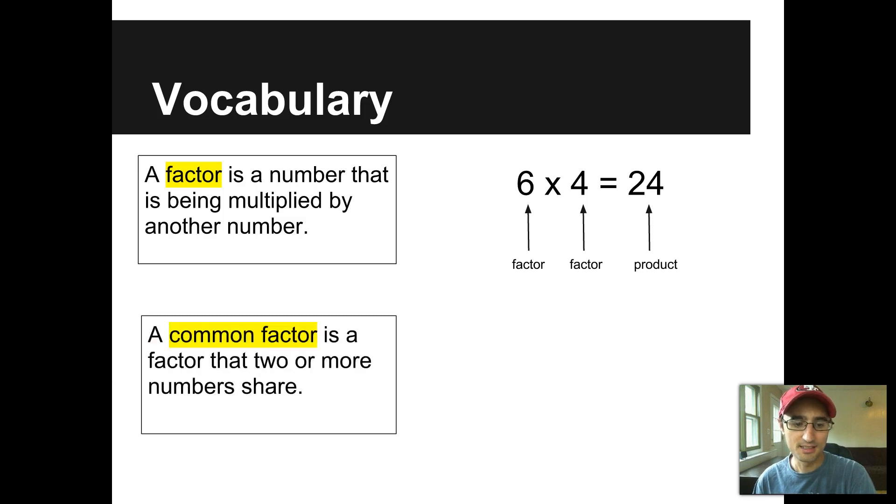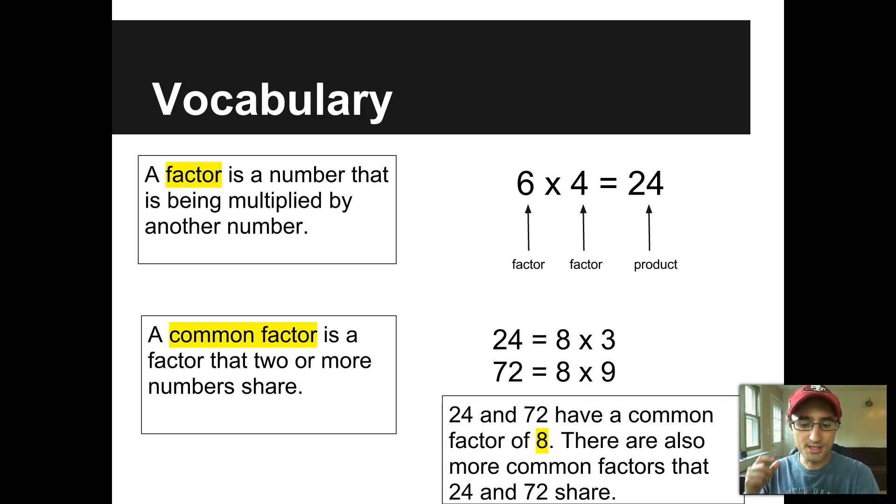A common factor is a factor that two or more numbers share. So if we look at the numbers 24 and 72, they both have a common factor of 8 because 8 times 3 gives us 24 and 8 times 9 gives us 72. So we've got factors and common factors. Easy so far, right? I knew you could do it.